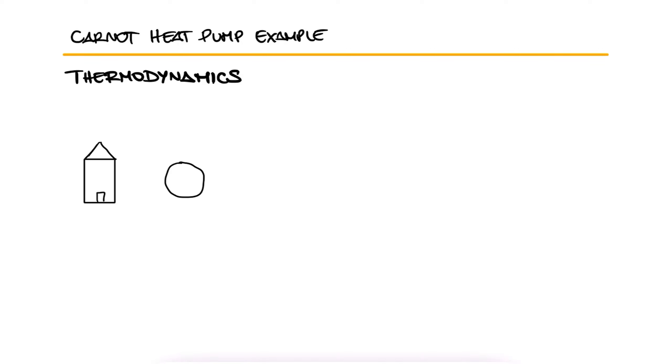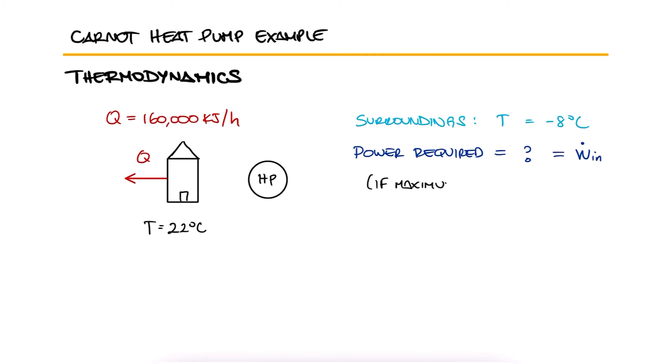A house is being heated by a heat pump. The house is at a constant 22 degrees Celsius and loses heat at a rate of 160,000 kilojoules per hour when the outside temperature is minus 8 degrees Celsius. What is the power required to operate the heat pump, assuming maximum performance?